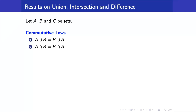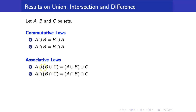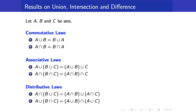Here are some more results. We have the commutative laws: set union and set intersection are commutative — the order does not matter. We also have the associative laws: if you have the same operation throughout, the parentheses do not matter, so we write A union B union C, and similarly A intersection B intersection C. Next, we have our distributive laws: if you have different set operations, you can distribute — A intersection (B union C) equals (A intersection B) union (A intersection C).